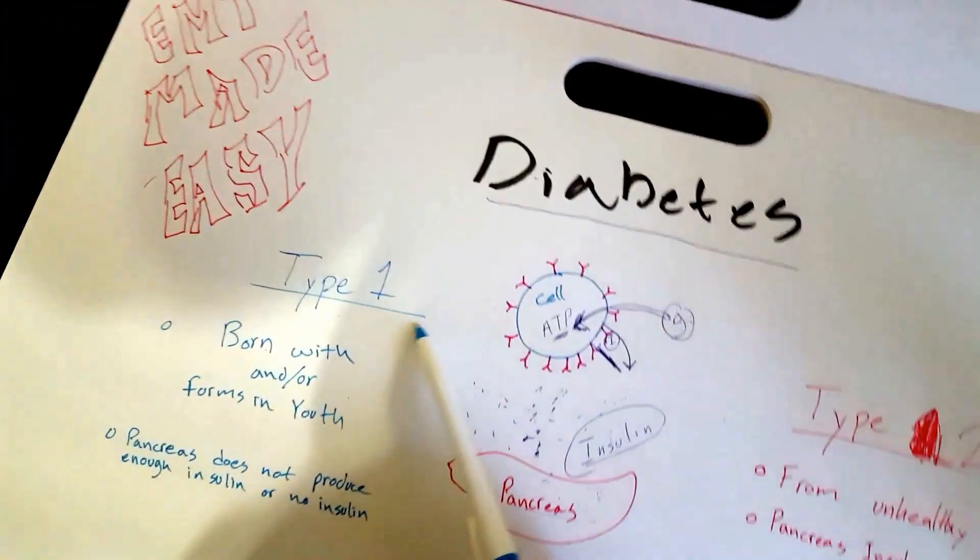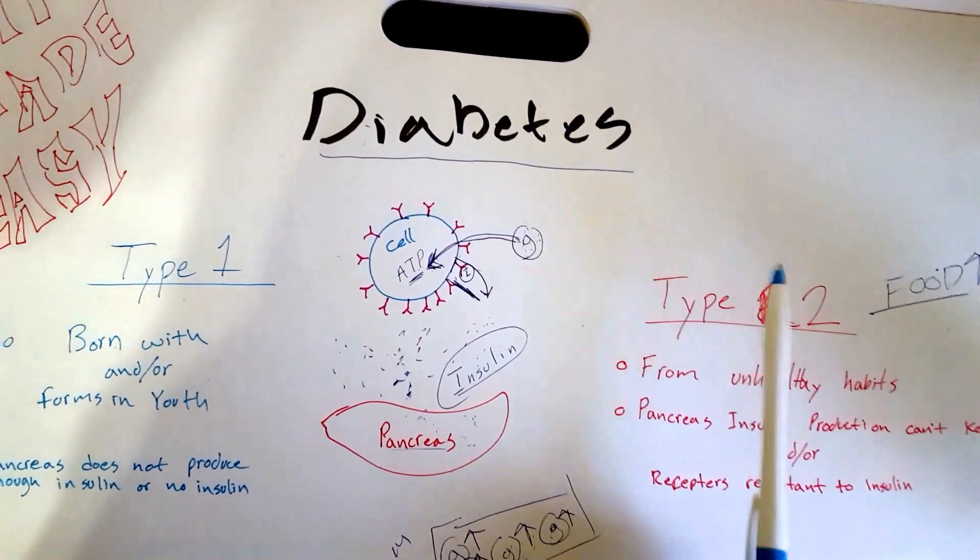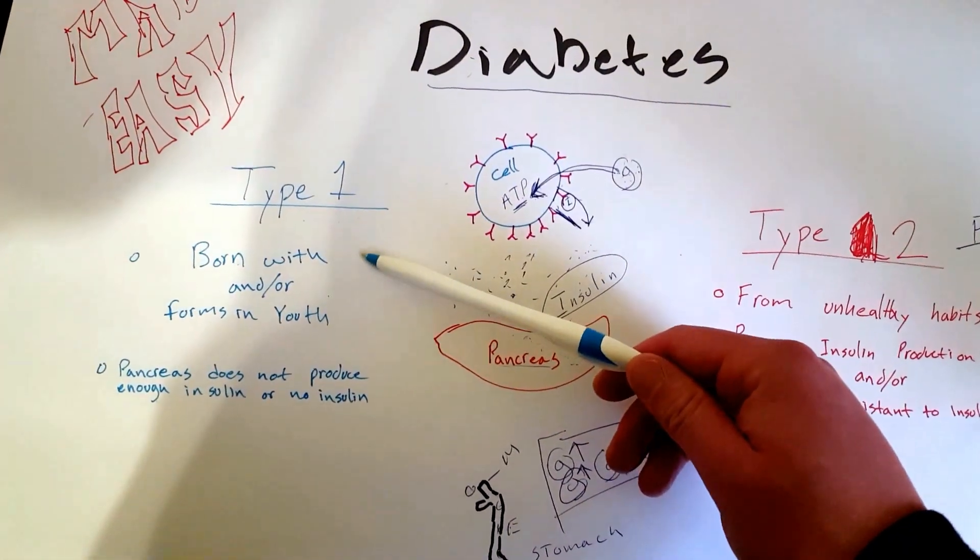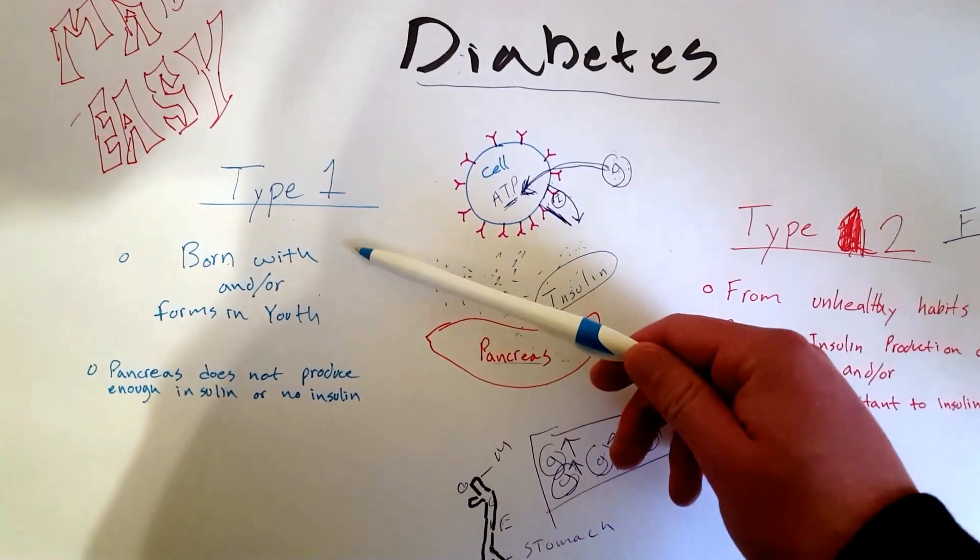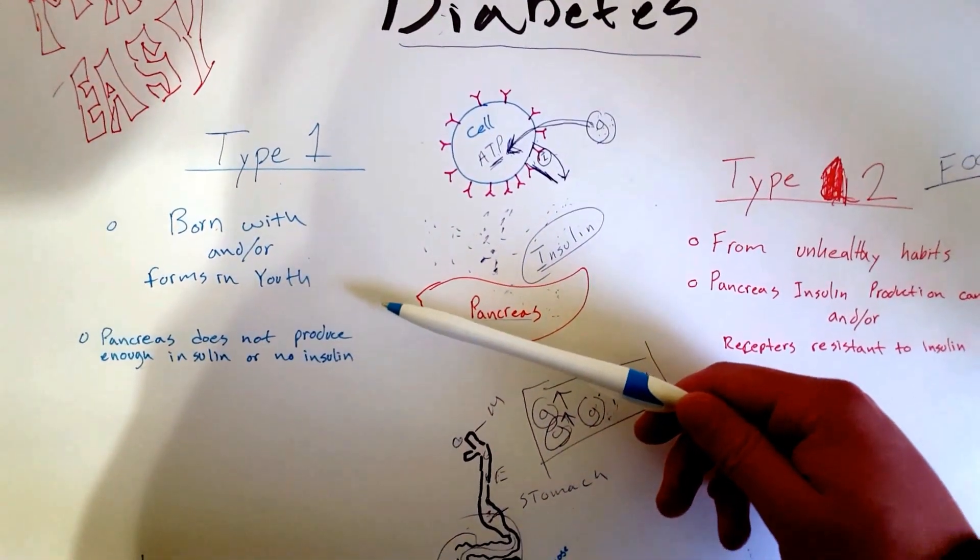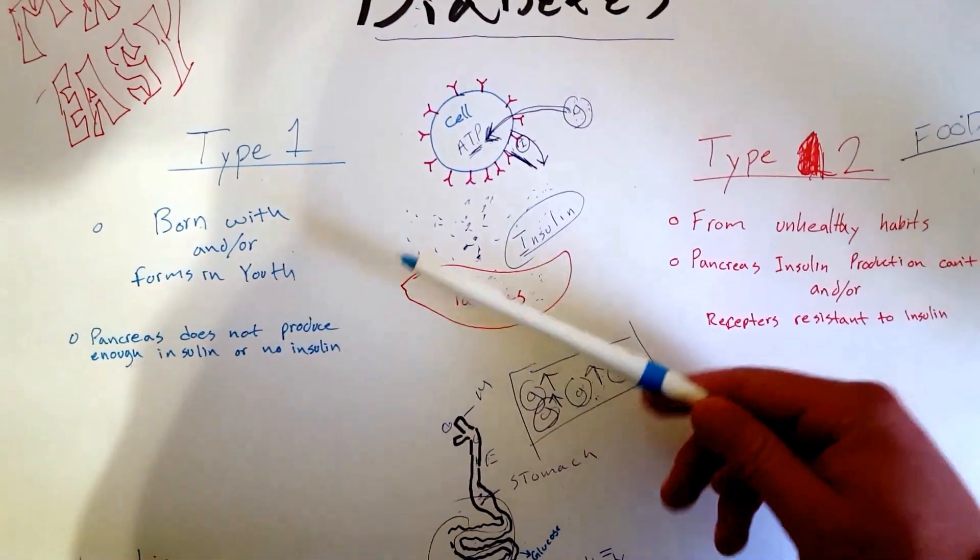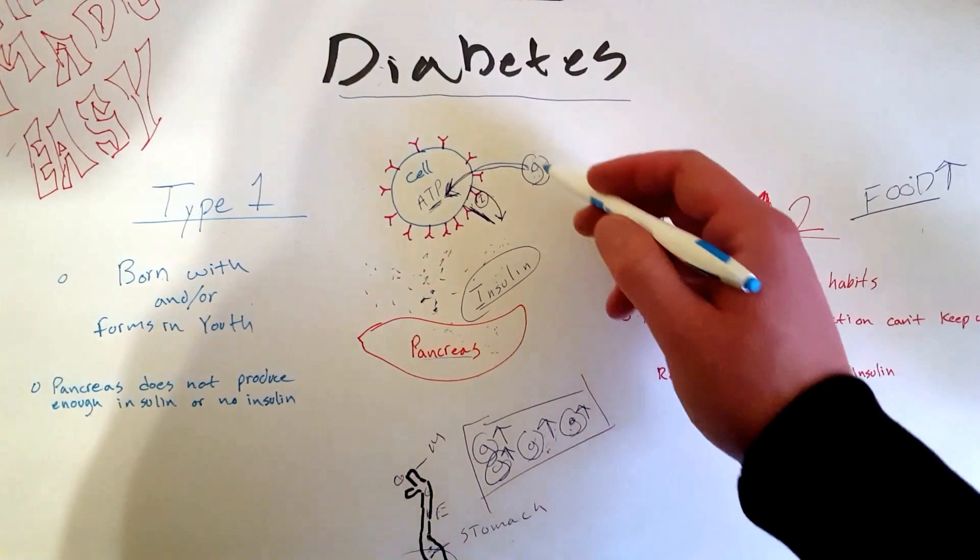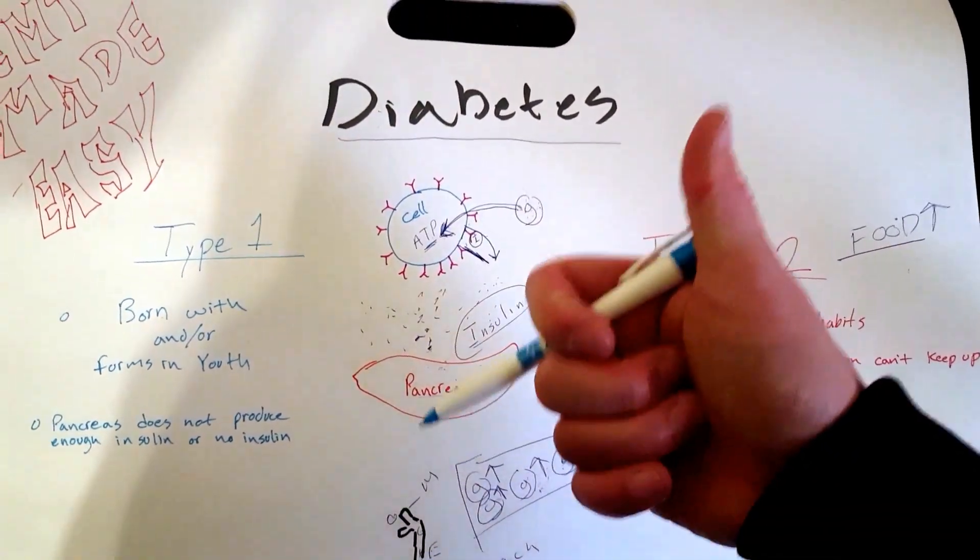There are two types of diabetes: Type 1 and Type 2. In Type 1 diabetes, people are born with it, and their pancreas is not producing enough insulin or no insulin at all. Glucose runs in your bloodstream, and when glucose increases a lot in your bloodstream, the pancreas releases insulin.